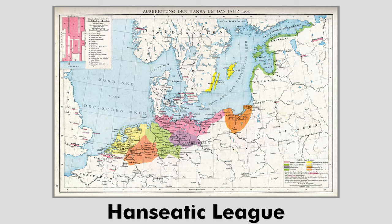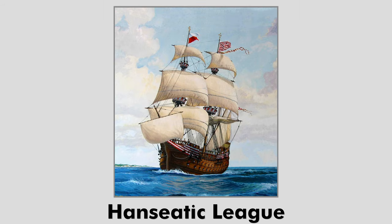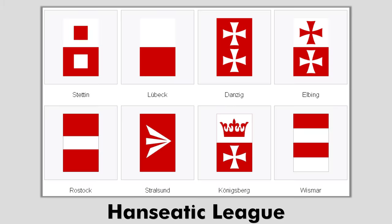Red and white were also colors of the Hanseatic League. Hanseatic trading ships were identifiable by their red-white pennants, and most Hanseatic cities adopted red and white as their city colors.